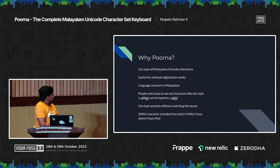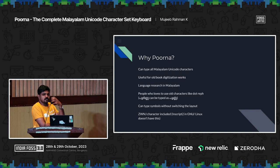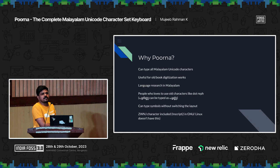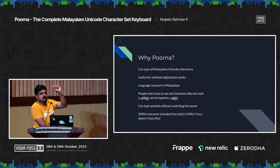Why Poorna? Because you can type all Malayalam Unicode characters. None of the other keyboards are providing that. We have to go to the character map and pick one character and paste it before the Poorna keyboard existed. It will also be useful for old digitization work. In old books, there are a lot of such characters. Also, for language research in Malayalam, these kinds of characters are also needed. You can see that Poorna in Malayalam can also be typed with an alternate form — both can be read as Poorna, but that character can be replaced with a dot on top of the character.